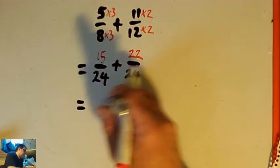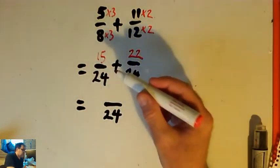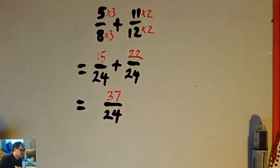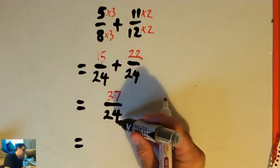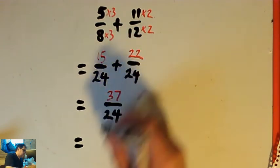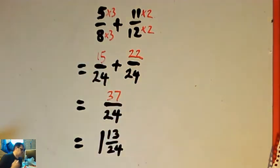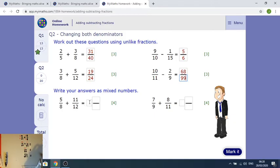Having got them both into twenty-fourths, I just add the tops: 15 plus 22 is 37, so that's 37 out of 24. Then I ask myself how many 24s I can get out of 37. That's just 1 with 13 left over. So the final answer is 1 and 13 twenty-fourths. Filling that in on the iMaths: 1 and 13 over 24.